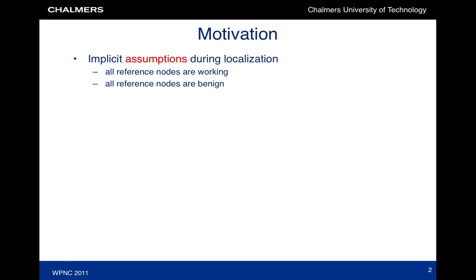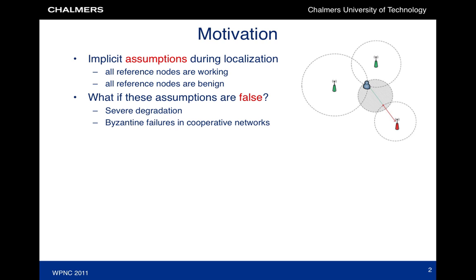In most location-aware networks, it is assumed that all the anchor nodes are benign and working properly. By ranging or distance estimation with anchor nodes, agent nodes are able to determine their position. When our assumption regarding the anchor nodes is false, this will lead to severe positioning errors.